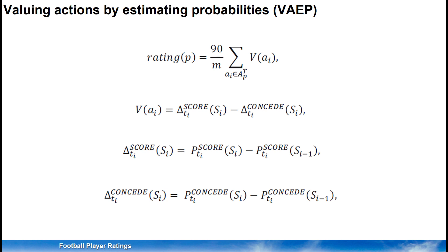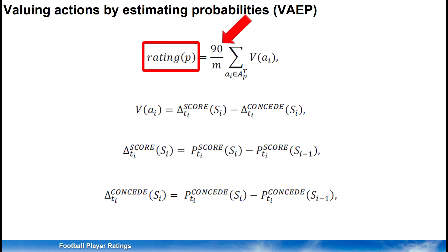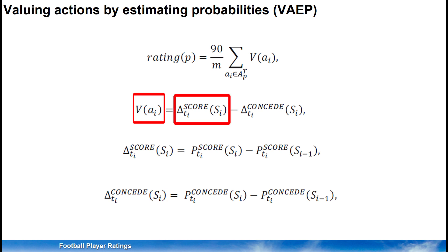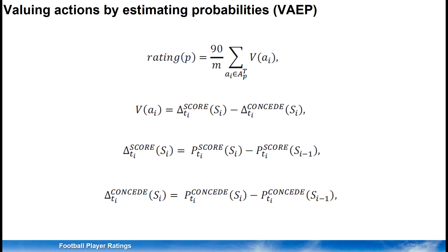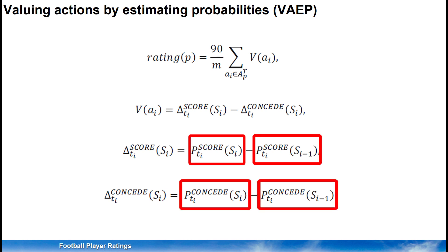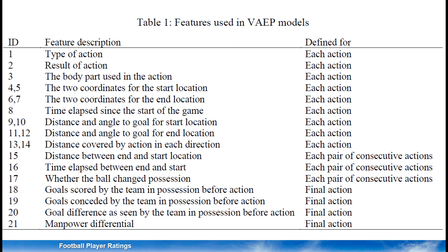While we refer to other videos on this channel for more information on the top-down plus-minus ratings, this slide summarizes the idea of the bottom-up VAEP ratings. First, the rating of a player is the sum of values from individual contributions (VAI), adjusted per 90 minutes of playing time. The value of an individual contribution or action is calculated by looking at the change in scoring probabilities minus the change in conceding probabilities that occurs as a result of the action. To calculate this, we need to first estimate the probability of scoring and the probability of conceding given a game state S_i. A game state consists of information about the previous three actions, and each action is described by a set of up to 21 features.